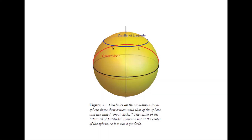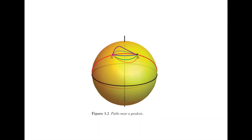Let's look at the geodesics on a sphere. Any geodesic on a sphere is going to be a circle whose center is also the center of the sphere, called a great circle. A parallel of latitude, for example, has a center located off-center — not at the sphere's center — and so it's not a great circle, and it's not a geodesic path connecting A and B along the great circle.